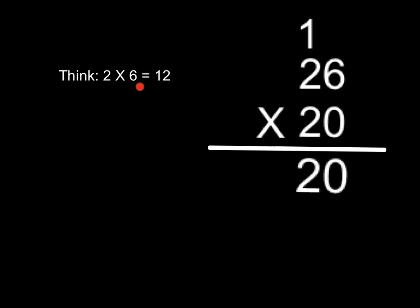When we get to multiplying, just think of it as 2 times 6. Well, that's 12. And like we did before with our single-digit multiplication, we're going to carry over the digit in the tens column and write down the number in the ones column — although we're really carrying over the digit in the hundreds column and writing down the number in the tens column. But don't worry about that. Just think of it as 2 times 6 is 12.